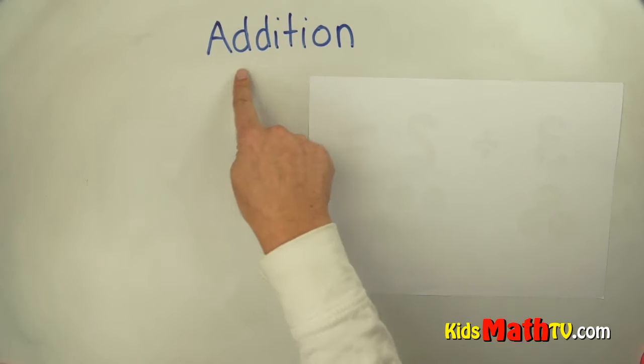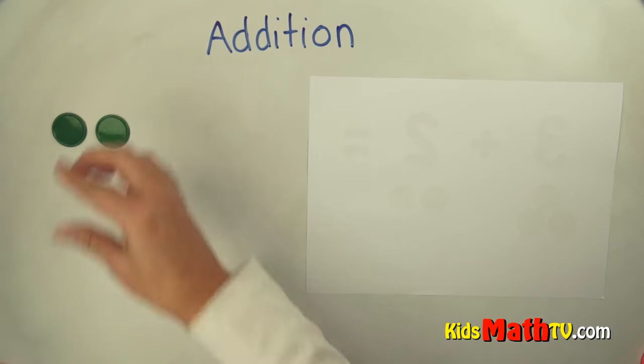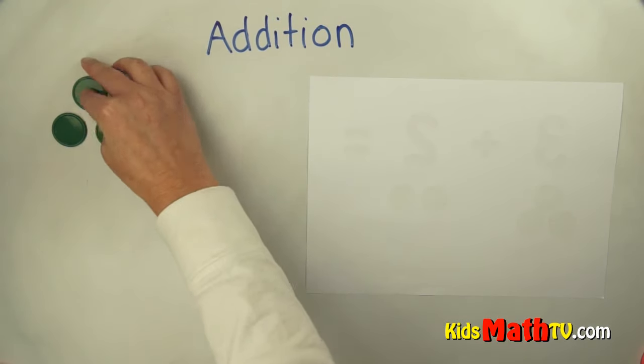In this lesson you will learn about addition. So we are going to start with some round chips. So here we have one chip, two chips, and three chips.